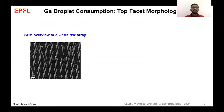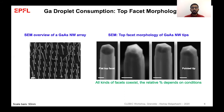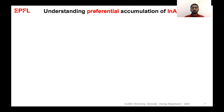We look at these nanowires after the gallium droplet consumption step, where we see an SEM image of a nanowire array. When we zoom in, we see that the nanowire tips have various different facet morphologies, from a flat top facet to a pointed tip, with some nanowires showing top facets somewhere in between. The relative percentage of these facets depends on the growth conditions. After consuming the gallium droplet, we go on to deposit indium arsenide and try to understand how it preferentially accumulates.